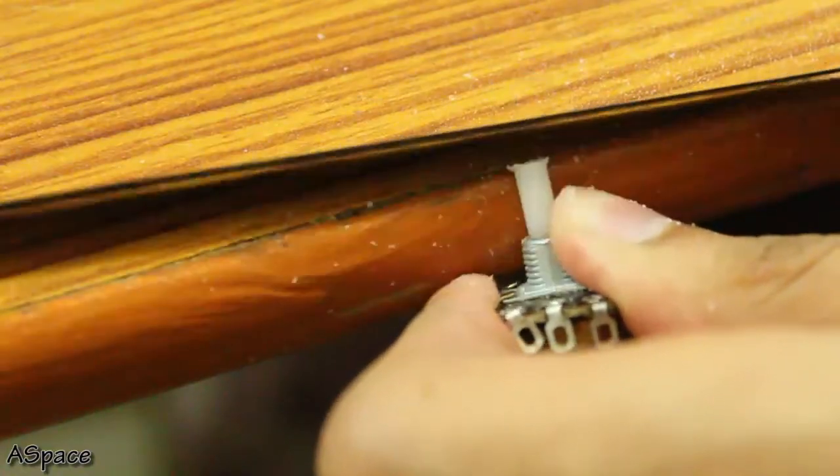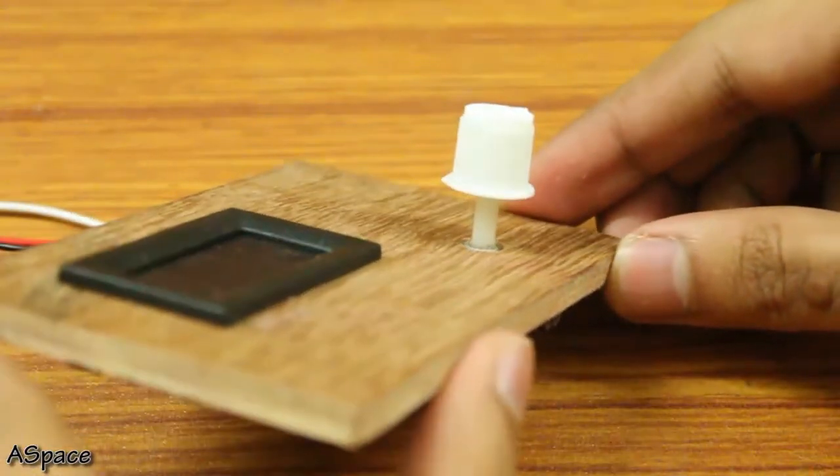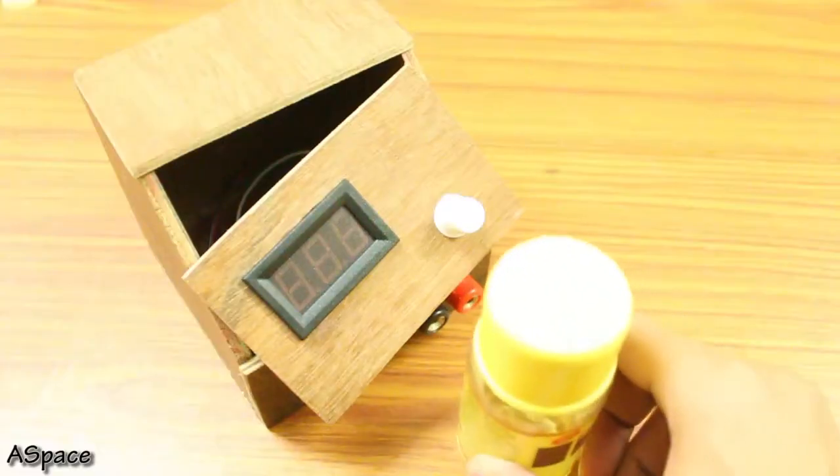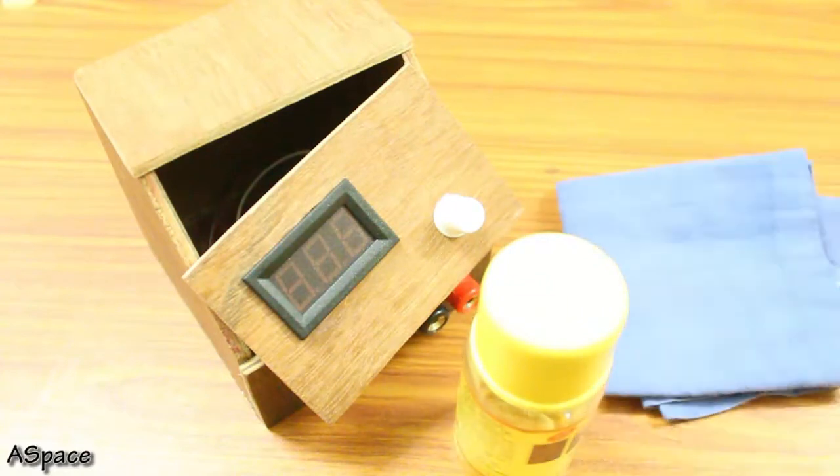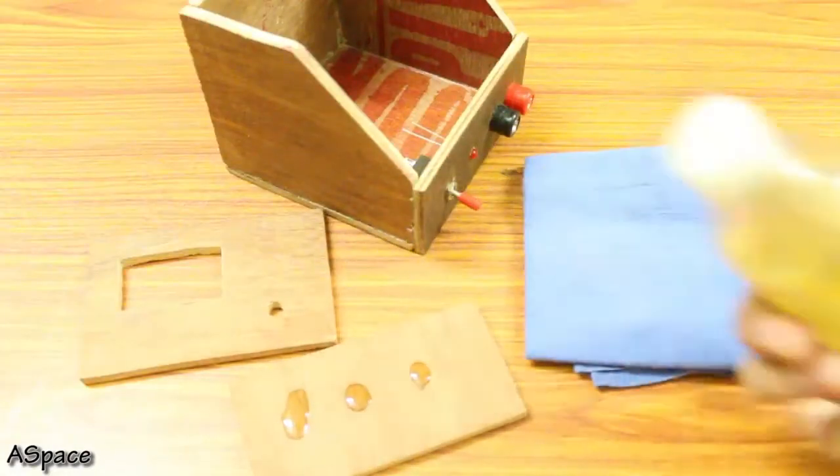Then I shortened the shaft, otherwise it would stick far out from the surface. Now with the help of tung oil, I gave a polish on the whole body using a soft piece of cloth.